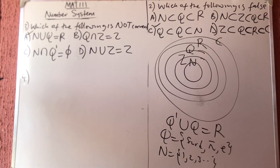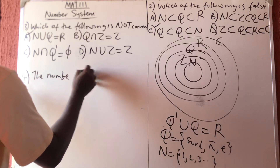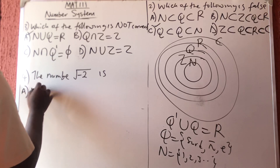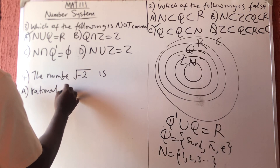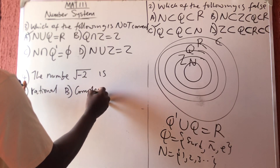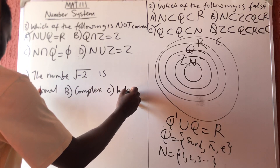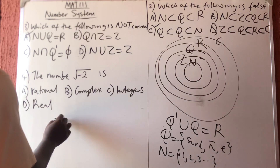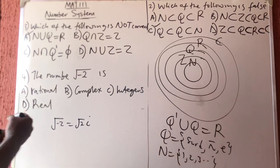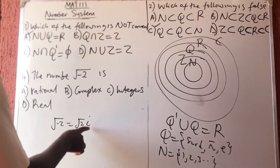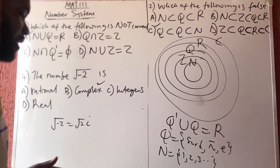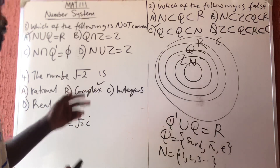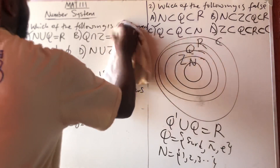Question number four asks: the number square root of minus two is which type? Options are: A — rational numbers, B — complex numbers, C — integers, D — real numbers. Square root of minus two equals i times square root of two. Anytime you see i, that is the imaginary part, and any number with an imaginary part is a complex number. So the correct answer is B — complex numbers.